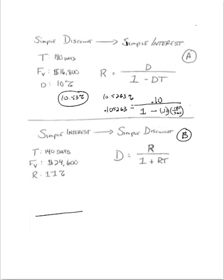We know our rate, simple interest rate, is 11%. And we know that our rate is still 11% for this formula. And then our time is 140 days over 360.